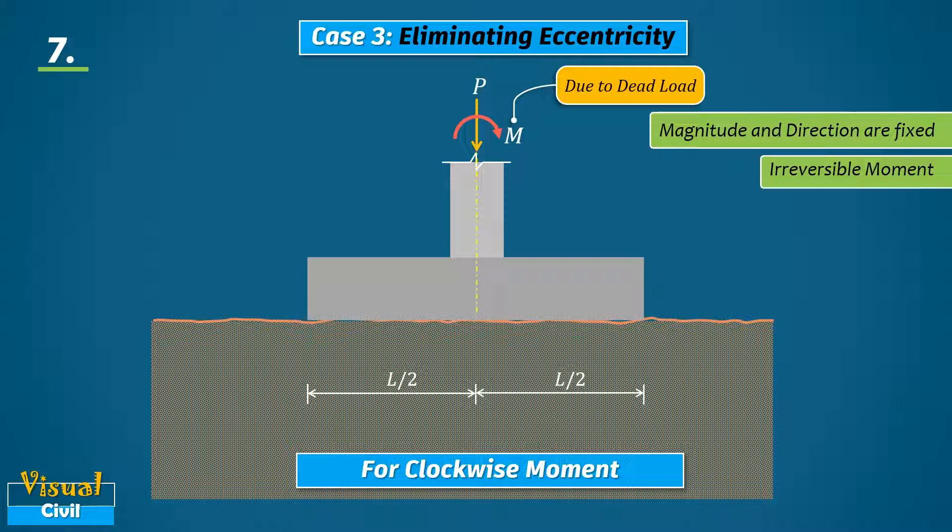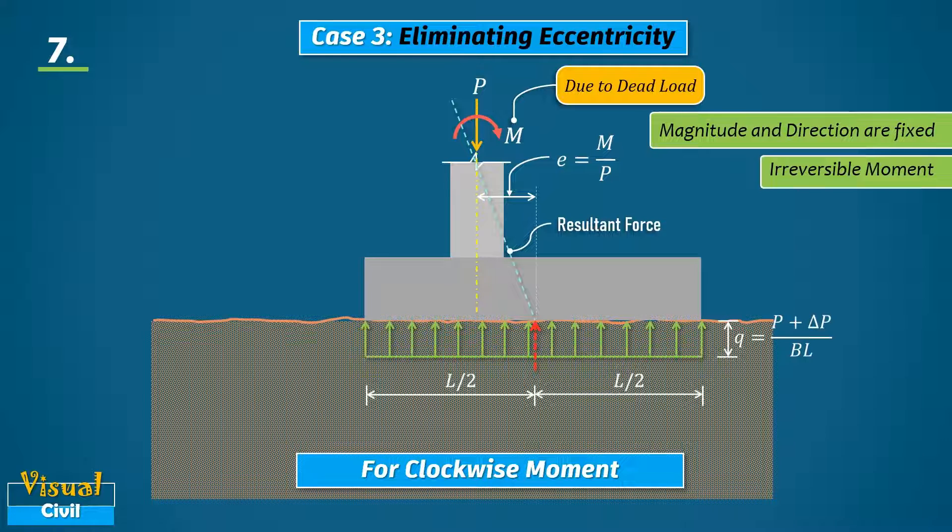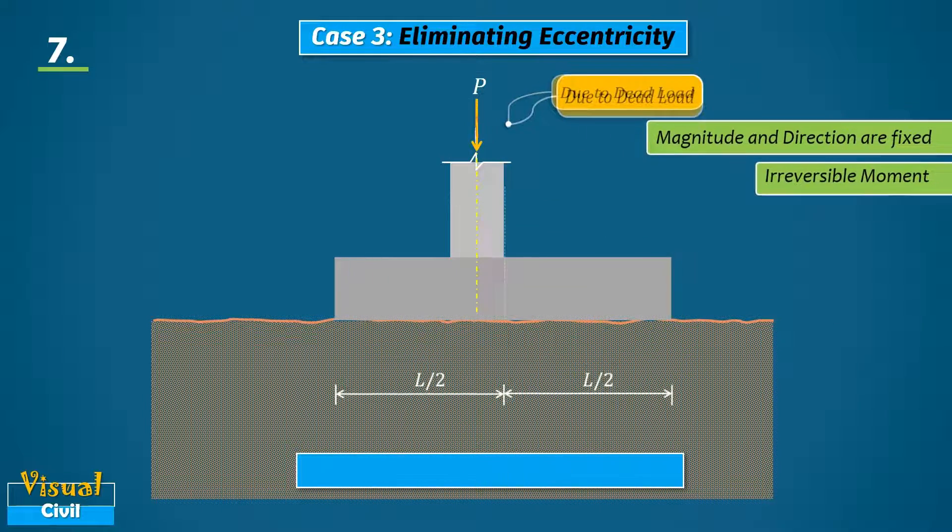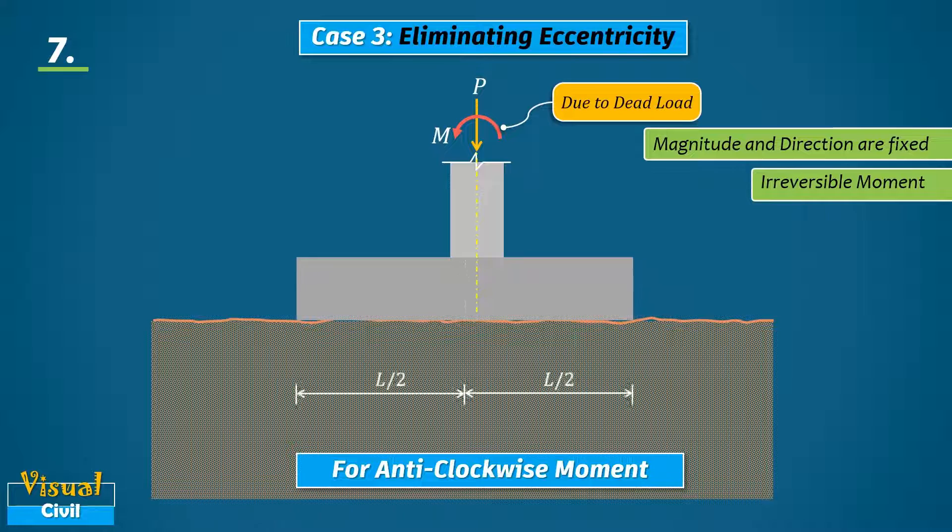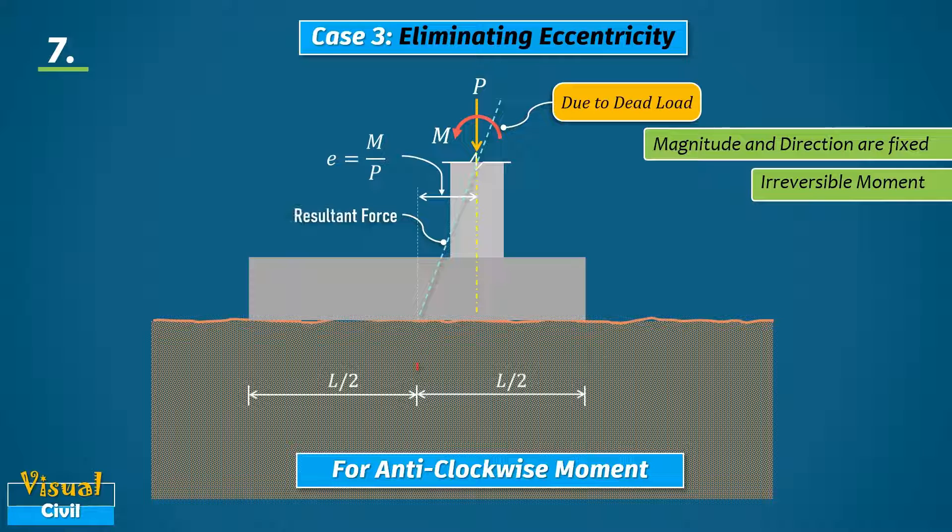Then we can laterally shift the footing base relative to the column to make the effective eccentricity in loading nearly equal to zero. Here the moment is clockwise, hence the footing can be shifted a distance equal to eccentricity e to the right side of the column axis. This will make the uniform upward pressure distribution. If the moment is anticlockwise, then the footing can be shifted to the left side of the column axis as shown here.